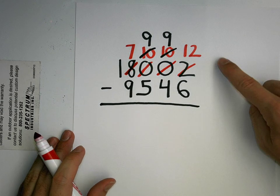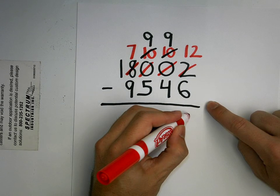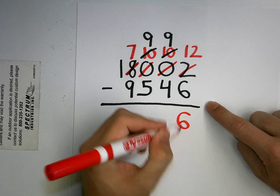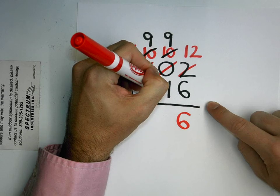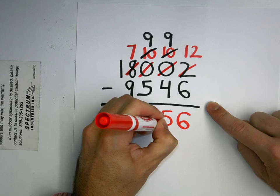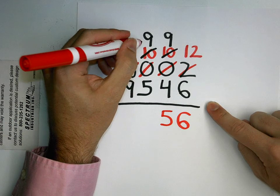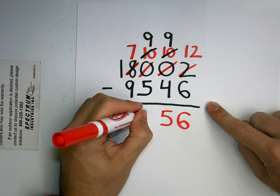So twelve take away six is just six. Nine take away four is five. Nine take away five is four.